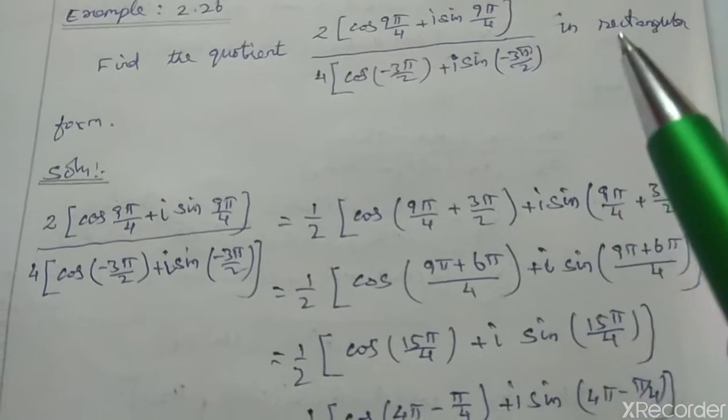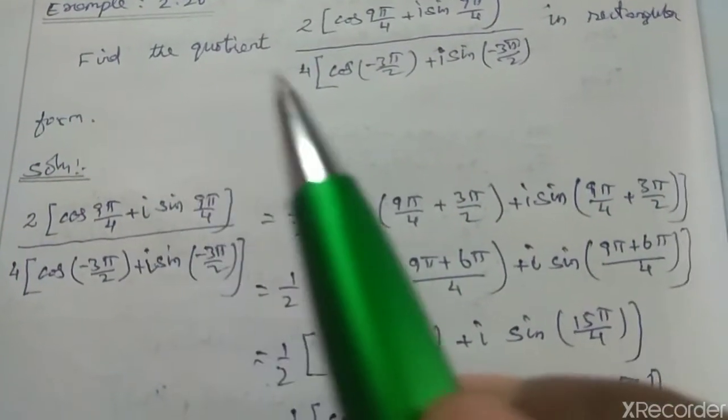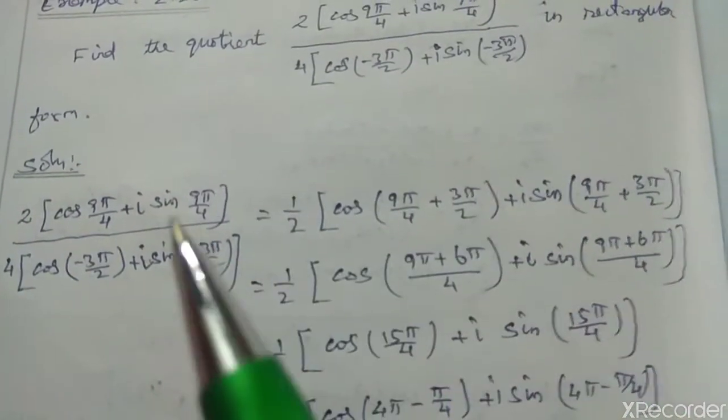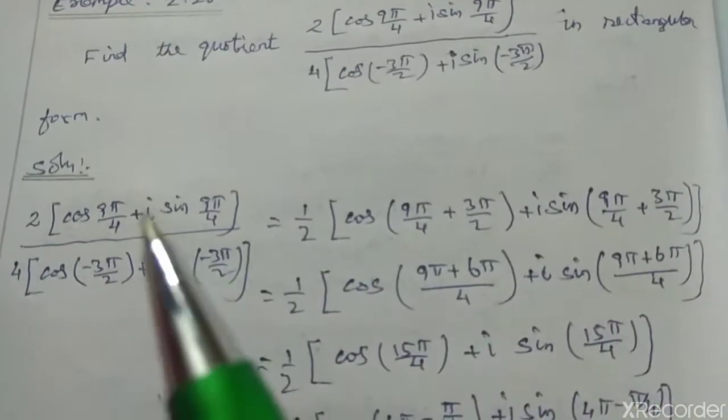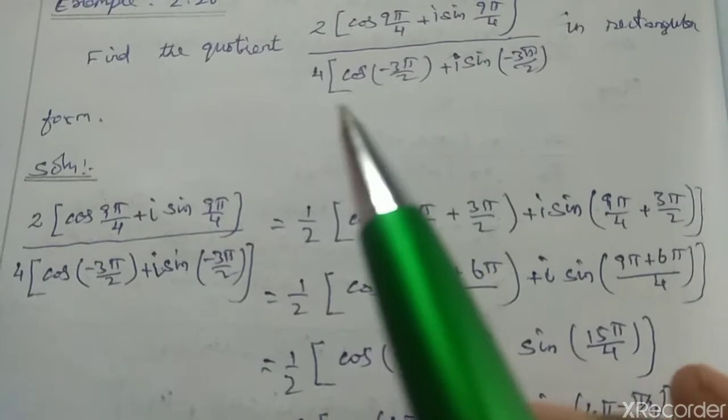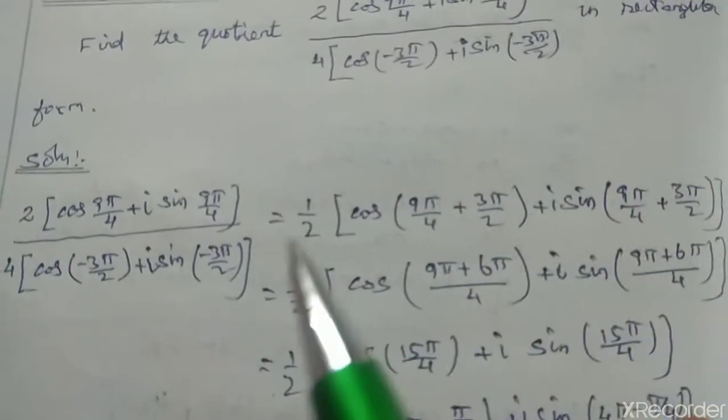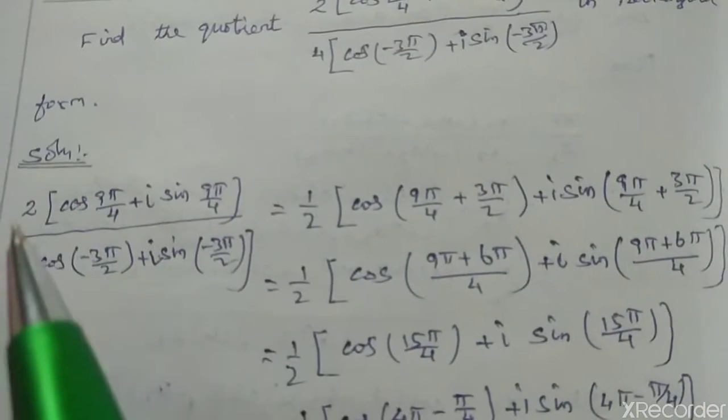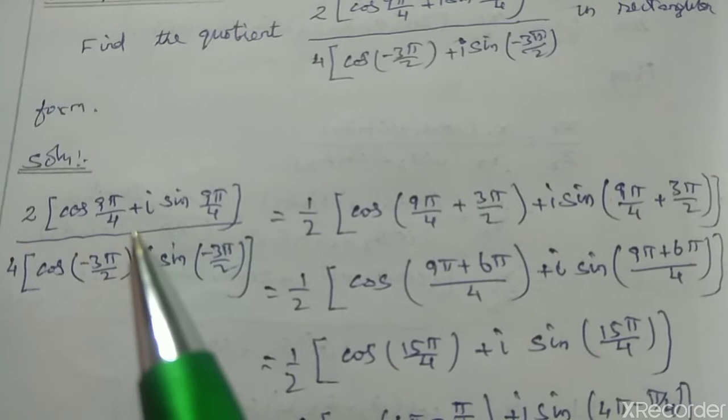So 2 times cos(9π/4) plus i sin(9π/4), divided by 4 times cos(-3π/2) plus i sin(-3π/2). This equals 1/2 times cos of 9π/4...